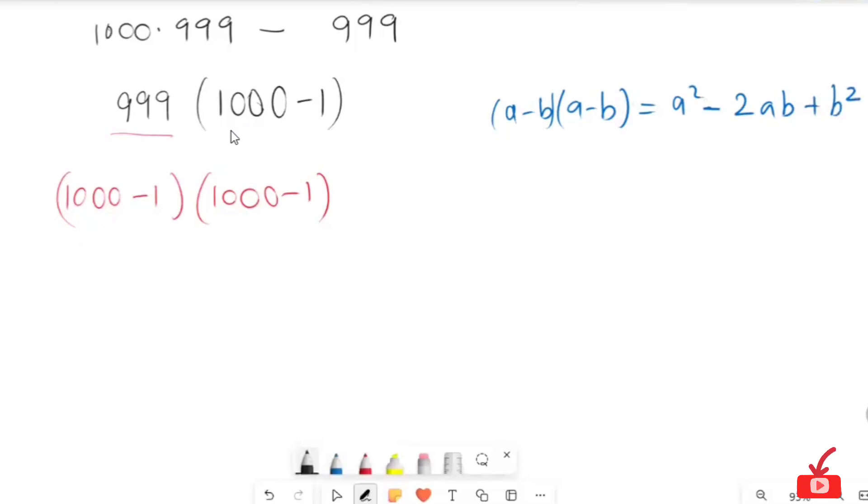If we turn, this is a and this is b. 1000 squared minus 2 bracket 1000 bracket 1 plus 1 squared. And I will get 1000000 minus 2000 plus 1.